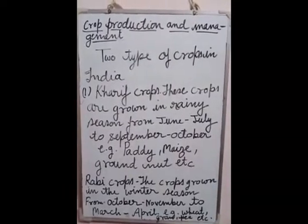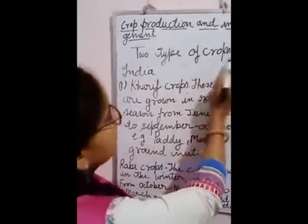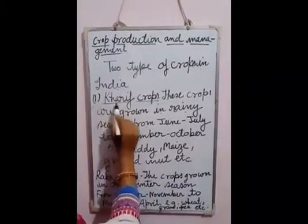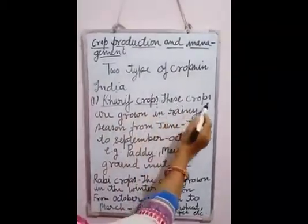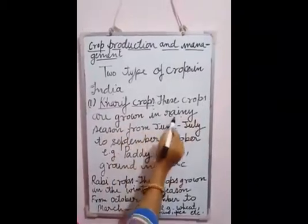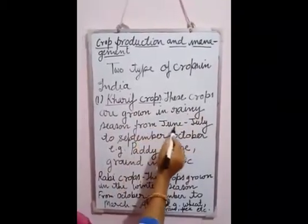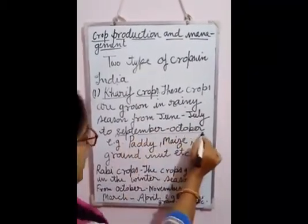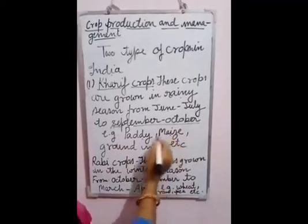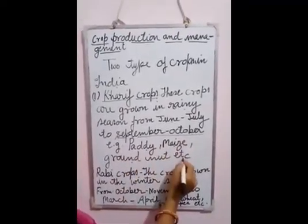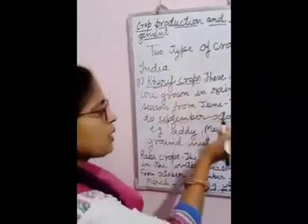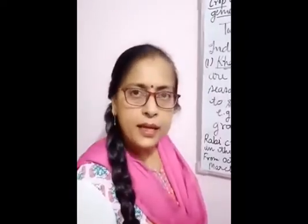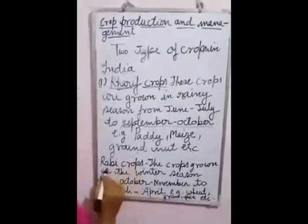On this basis, there are two types of crops in India. First, Kharif crops. Kharif crops are grown in the rainy season from June–July to September–October. Examples are paddy, maize, groundnut, etc. Kharif crops are also called rainy crops because they grow in the rainy season.